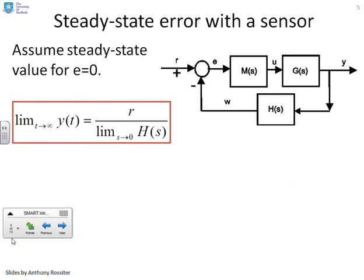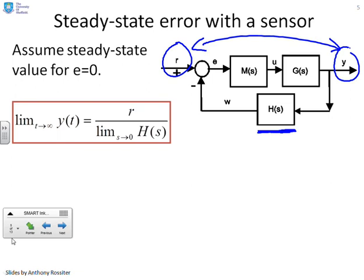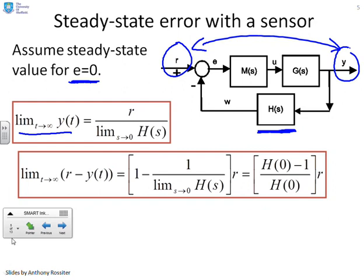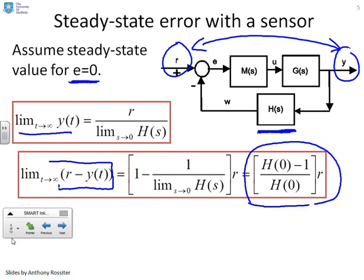What's the steady state error between the target and the output? These are the two signals we're really interested in when we have a sensor in the loop. We're going to assume the steady state value for E is zero because we've assumed there's always an integrator in the loop. The formula is: the limit as T goes to infinity of Y of T is R over the limit as S goes to zero of H of S. Substituting, the error in the steady state between the target and the output is H of 0 minus 1, all divided by H of 0, times R.